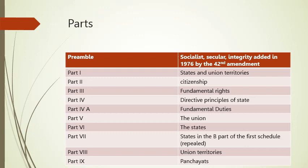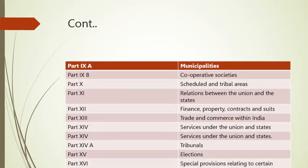Part three of the Indian Constitution explains the fundamental rights in India. Part four explains the Directive Principles of State Policy. Part four A explains the fundamental duties. Part five explains the Union. Part six explains the states. Part seven explains states in the B part of the first schedule.